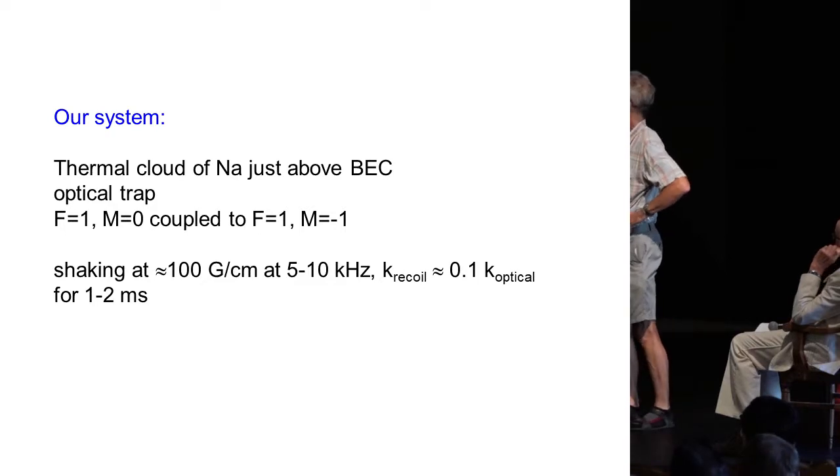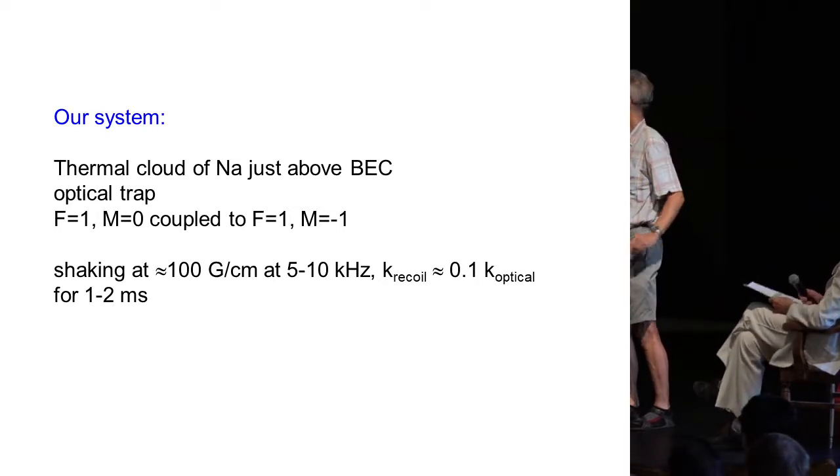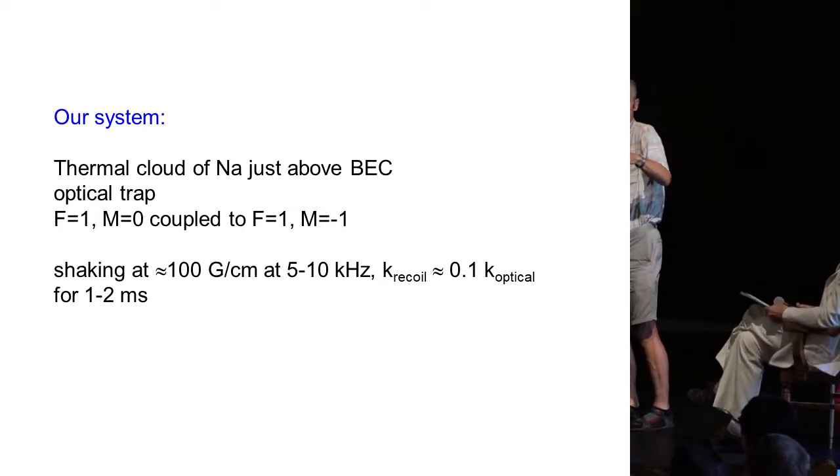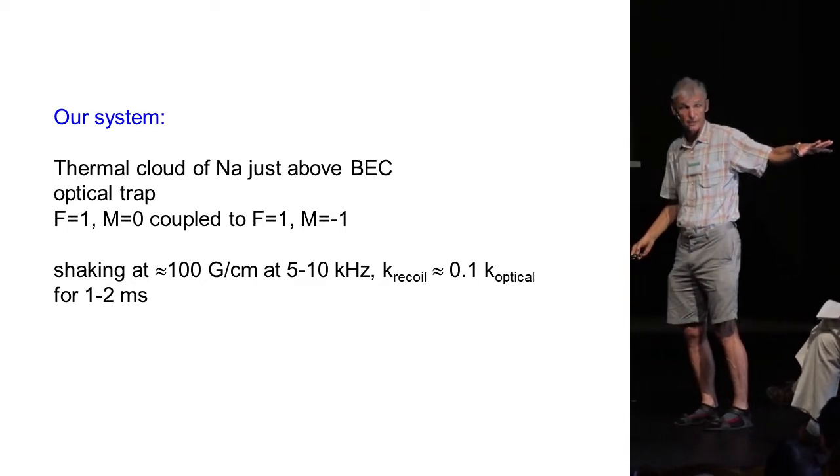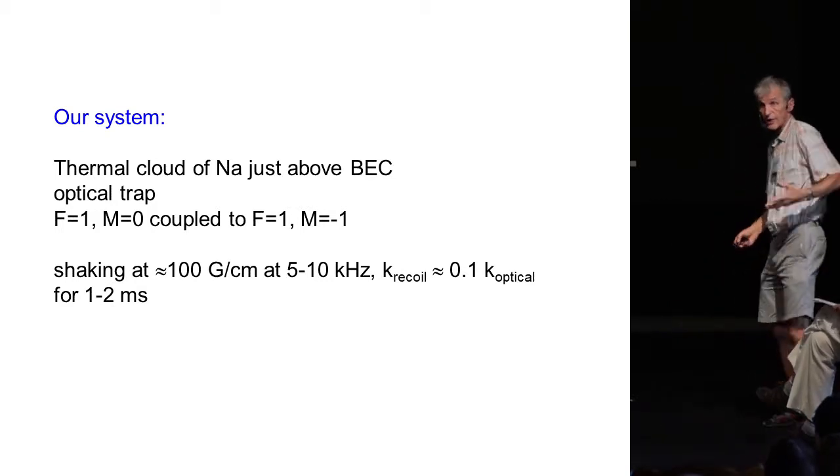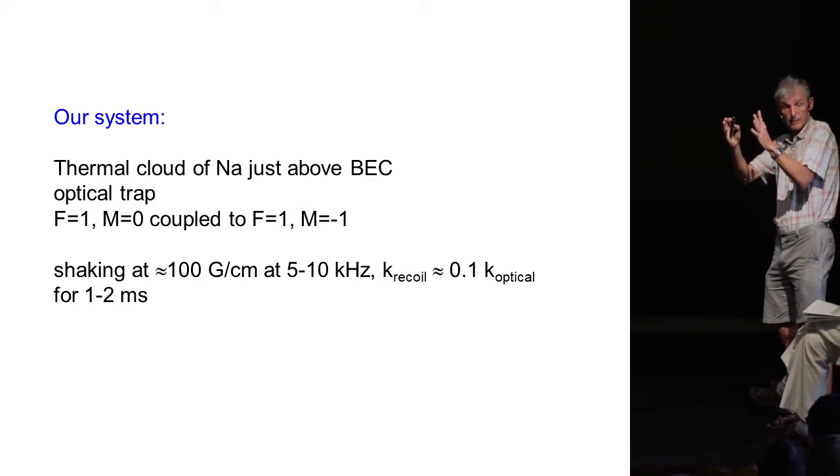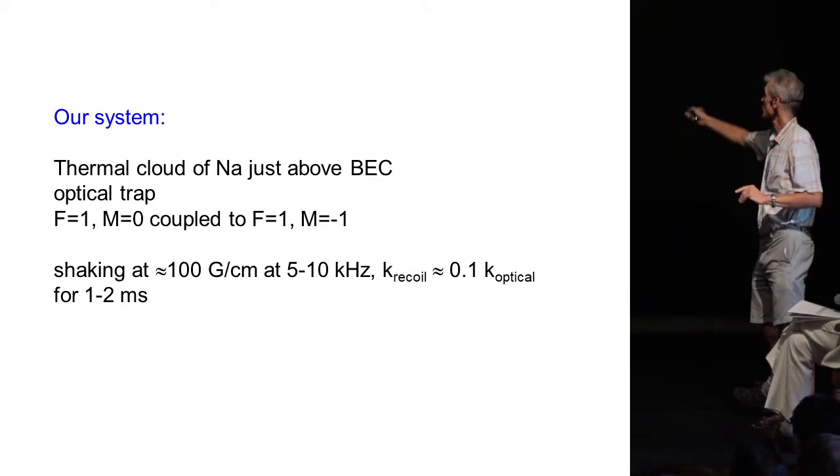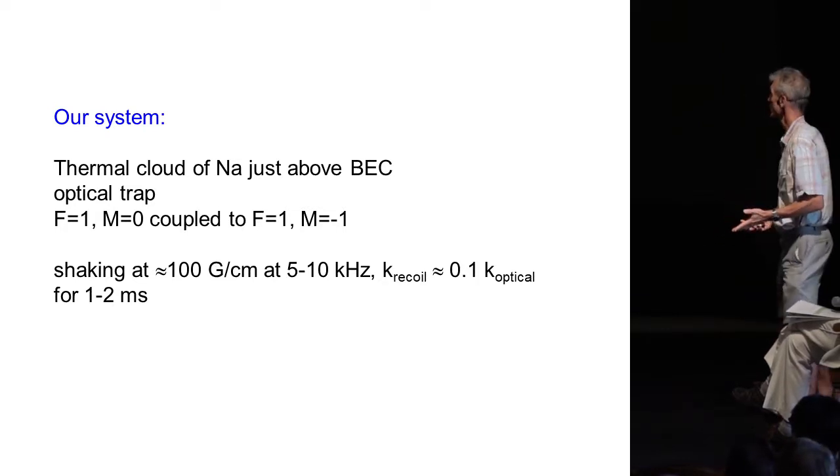What you see here is the time of flight picture of the atoms after the RF transfer without shaking, and this is just, we transfer part of the cloud to the other RF state. But if we do the shaking, we actually select a thinner slice in velocity space. And so, this shows that we have now velocity selection due to the Doppler shift.